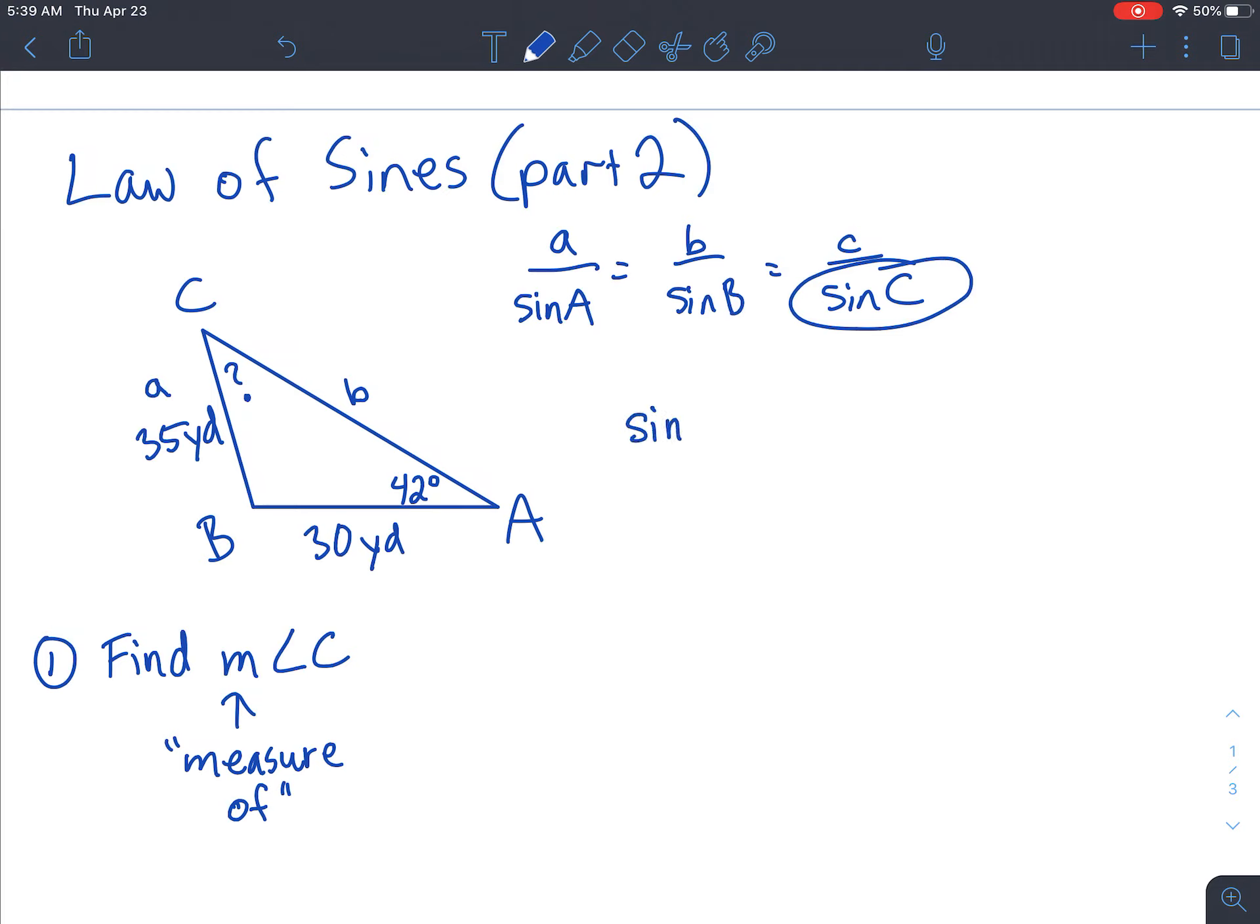So what we're looking for is angle C. So that's going to be sin of C. I'm going to put sin of C on top. It helps to have our unknown on top, makes the calculating just a little bit easier. And that matches up with c, across from C, 30 yards. Which equals, let's find our pair that match up. 42 degrees matches up with 35 yards. So sin of 42 degrees matches up with 35 yards.